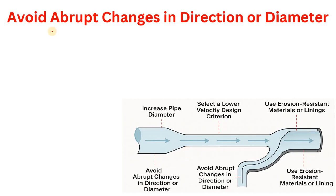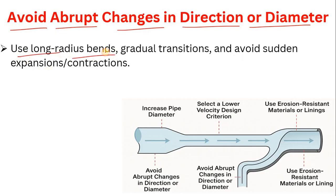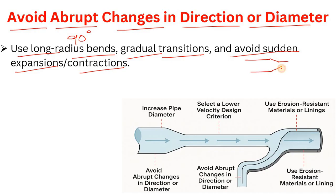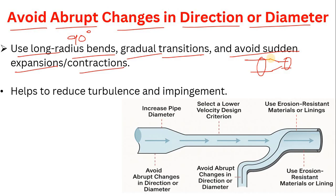The third method is to avoid abrupt changes in direction or diameter. You can use long-radius bends — for example, long-radius 90-degree elbows — and gradual transitions, and avoid sudden expansions or contractions. If a line reduces suddenly, your velocity increases at that point, raising the risk of exceeding erosional velocity. Avoiding abrupt changes helps reduce turbulence and particle impingement.